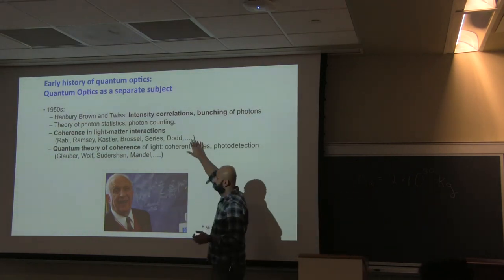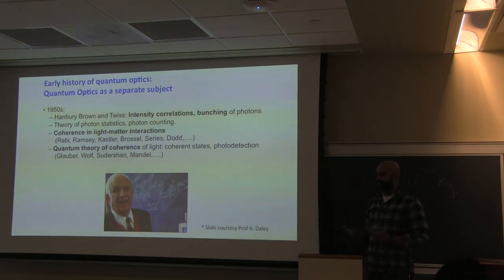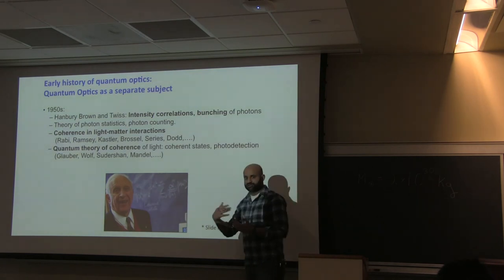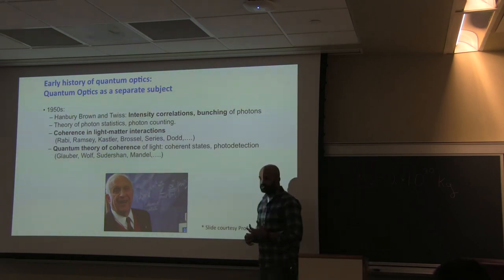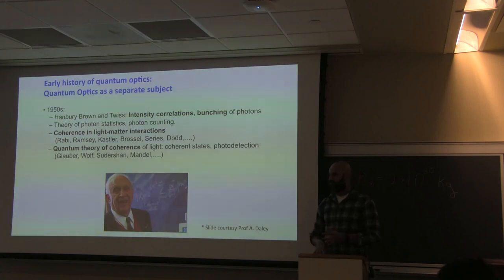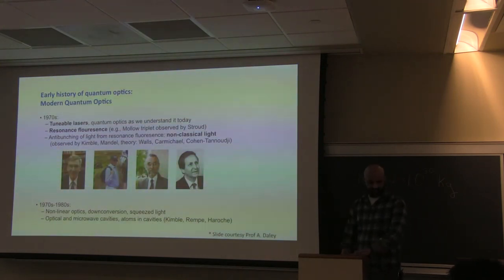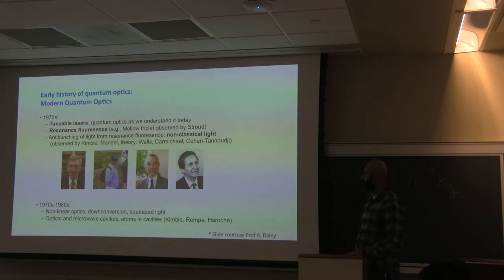Coherence also turns out to be important when you think about light-matter interactions. When you consider an atom driven by a coherent light field, it undergoes certain non-intuitive behaviors — Rabi oscillations and things like Ramsey fringes. All of those effects required explanation, and they came fairly quickly, but are also part of what we consider quantum optics, because they are low energy and don't require the fully relativistic treatment of electrons and positrons.